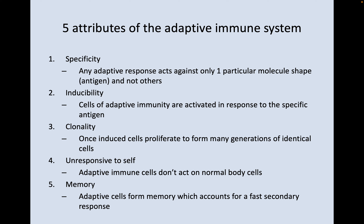There are five attributes of the adaptive immune system you need to be aware of. First is specificity — an adaptive response acts only against one particular molecule shape or antigen and not others. Second is inducibility: cells of adaptive immunity are activated in response to the presence of a specific antigen. Third is clonality: once induced, cells proliferate to form many generations of identical cells.